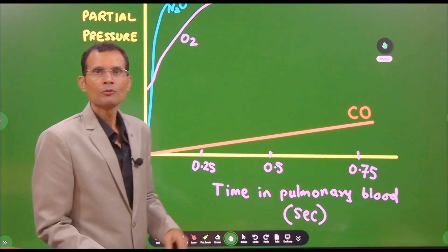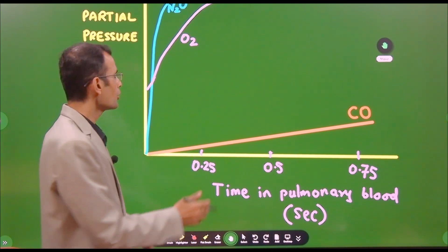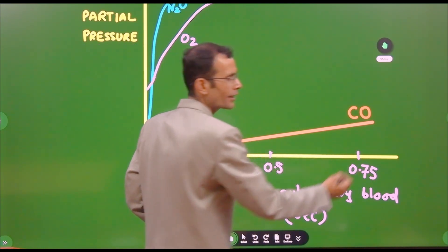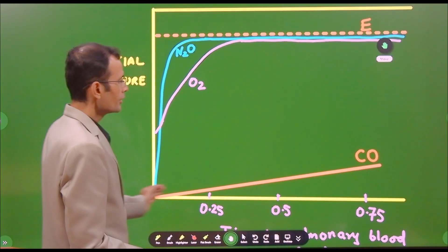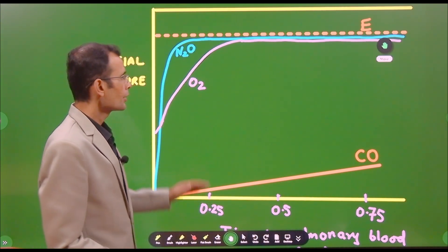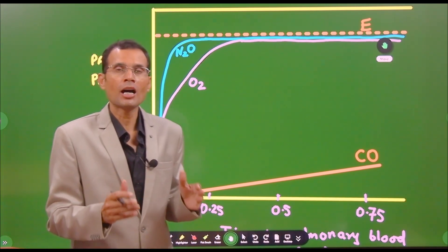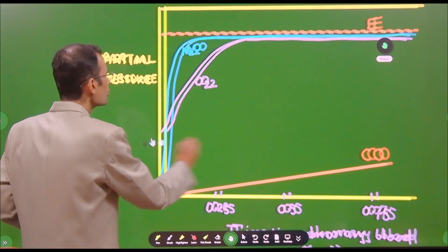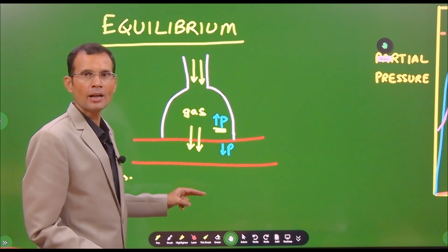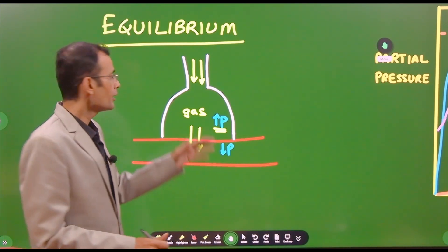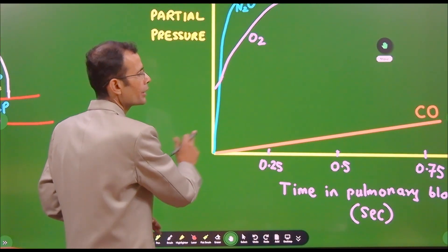Coming to carbon monoxide — watch it. Carbon monoxide was given by inhalation and from the alveolus it starts diffusing into the pulmonary blood. But even after 0.75 seconds, its partial pressure is hardly rising. On the vertical axis, it is not going up much. That is the behavior of carbon monoxide, and this is exactly why we can use carbon monoxide to measure the diffusing capacity. It reaches the alveoli, starts diffusing into the blood, but its partial pressure in the blood does not rise, or hardly rises.